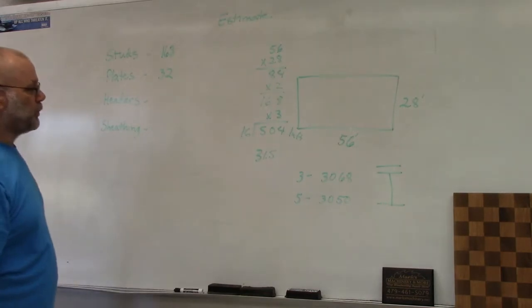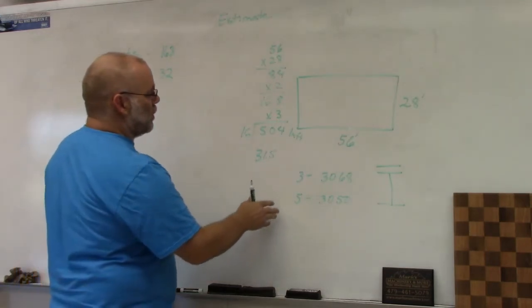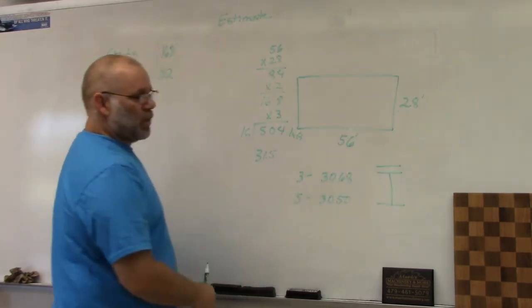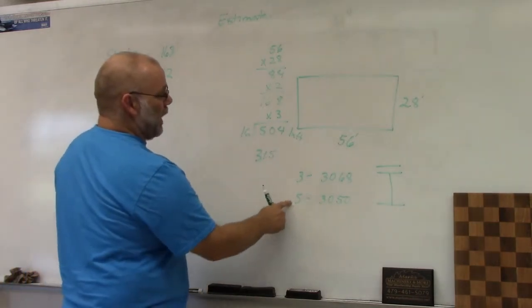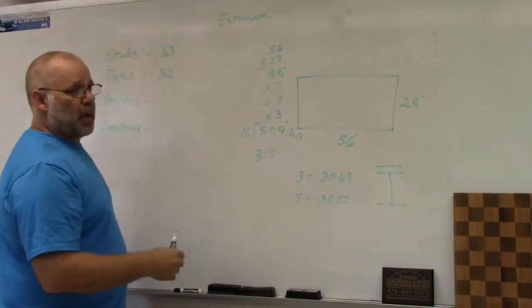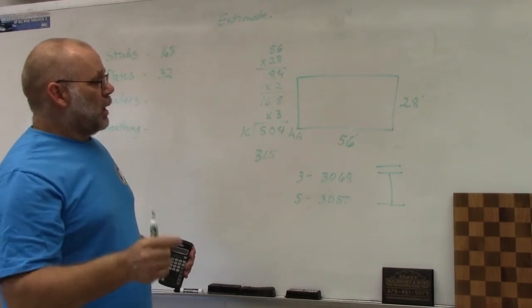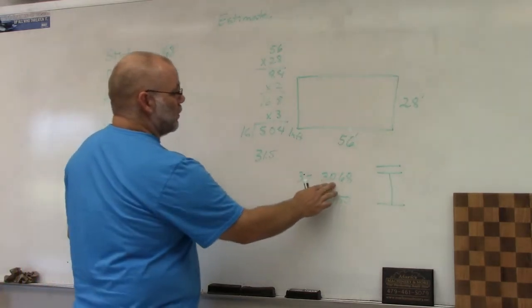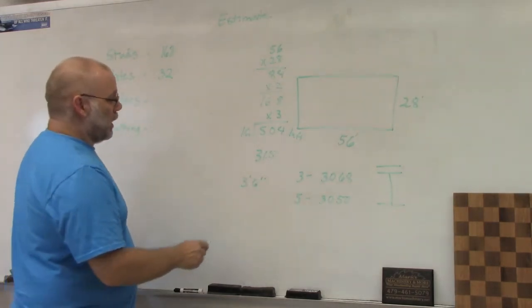For headers, you're going to go to the windows and door schedules to find out how big your windows and doors are. I've got three 3068 doors and five 3050 windows. 30 means they are three feet wide or 36 inches, and I need eight of those. Headers are longer than the window itself, so you have to add for spacings, jams, and trimmer studs. I like to just add six inches, so three feet becomes three feet six inches.